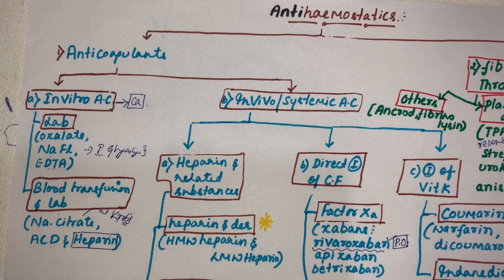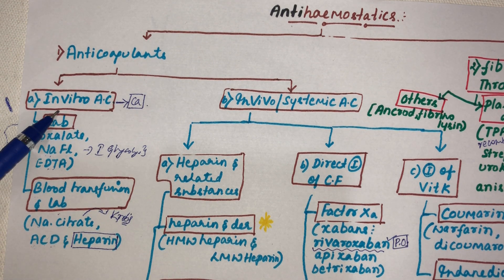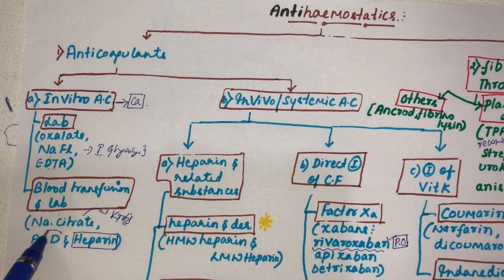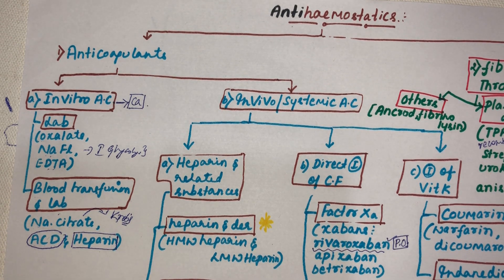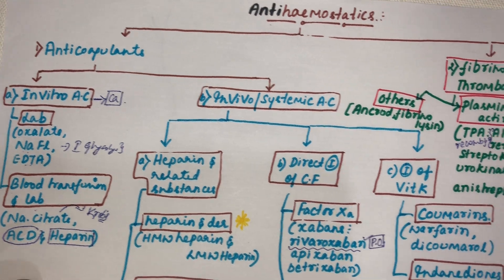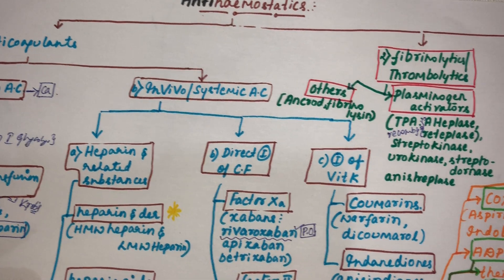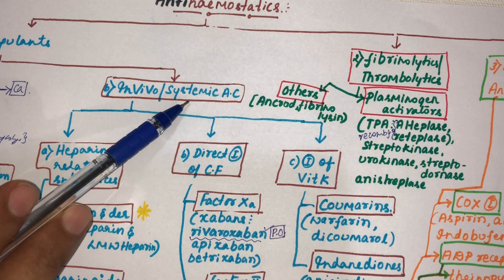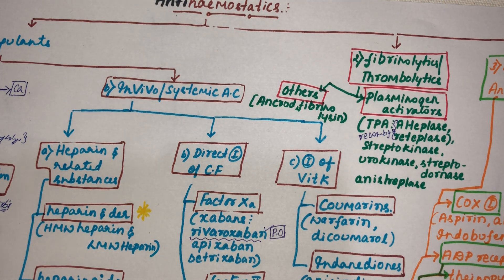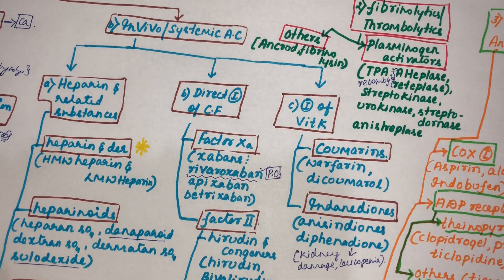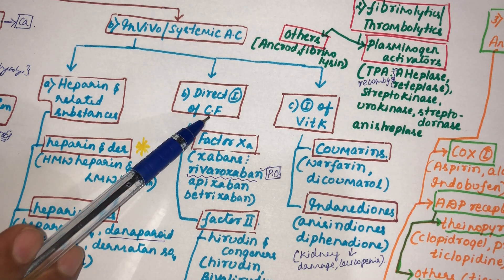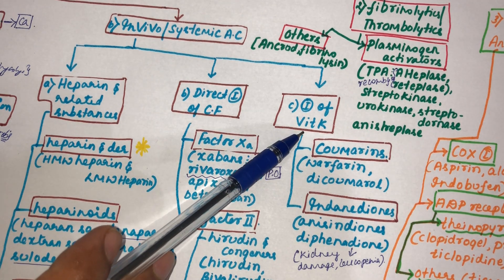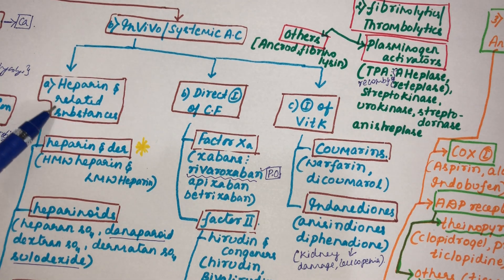In vitro anti-coagulants used for laboratory purposes differ from those for blood transfusion; ACD is preferred for blood transfusion. The second group, in vivo or systemic anti-coagulants, are further classified into heparin and related substances, direct inhibitors of clotting factors, and inhibitors of vitamin K.